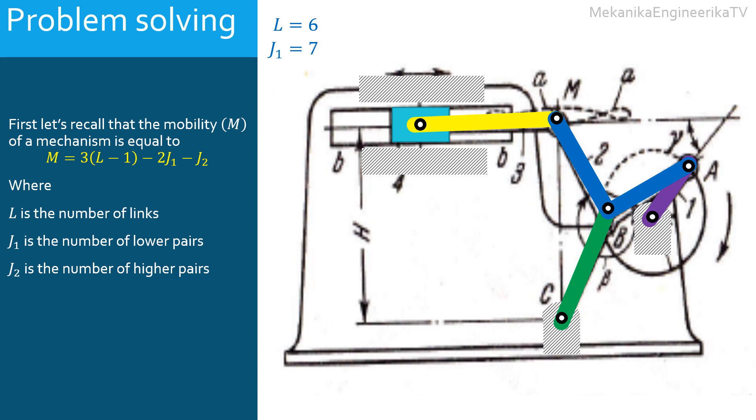In this example there is no cam or gear kinematic pairs. Thus, J2 is equal to zero. This mechanism is built from six links, using seven lower kinematic pairs, and no higher pairs.